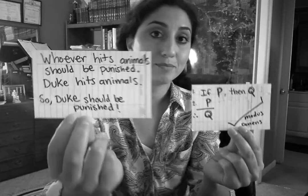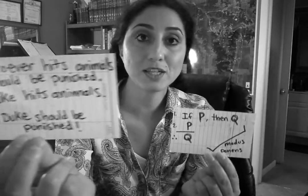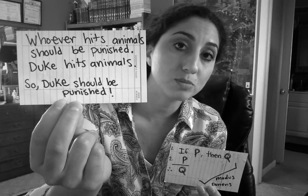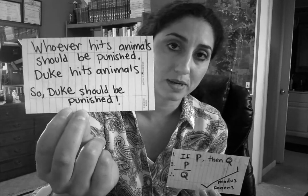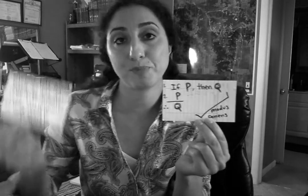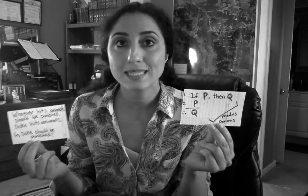Now, you could read this argument this way: if P, then Q — if you hit animals, you should be punished, and Duke is someone who hits animals, so Duke should be punished. But it also is a valid argument to say Q because if P, then Q. The missing assumption is that P. It's hidden. It's tacit. It's implicit — a secret that you could uncover.